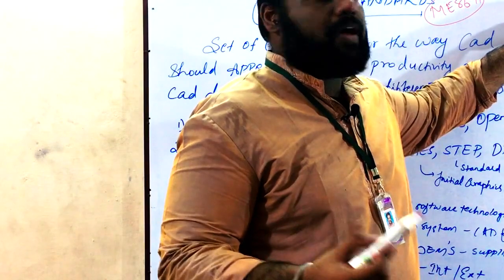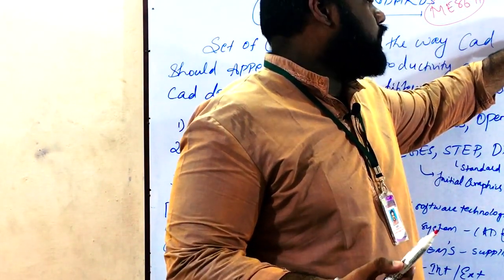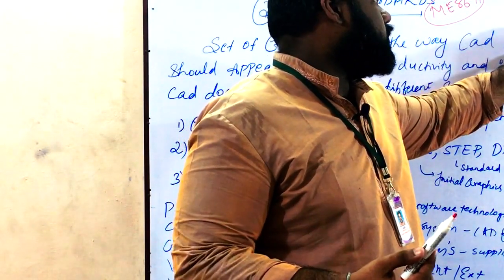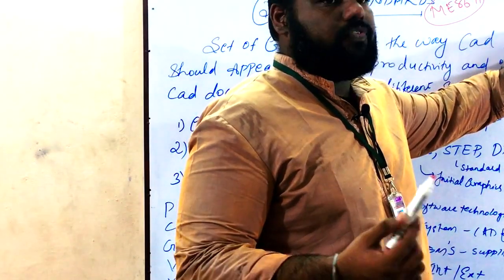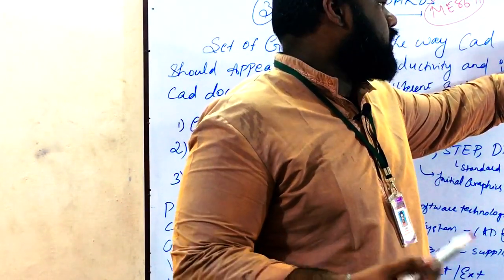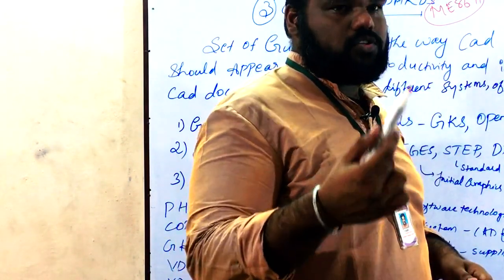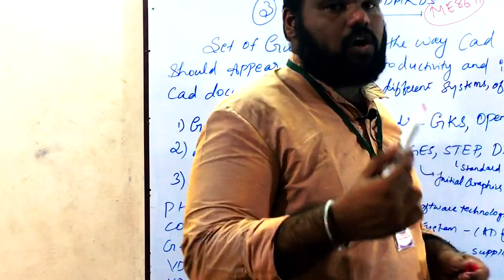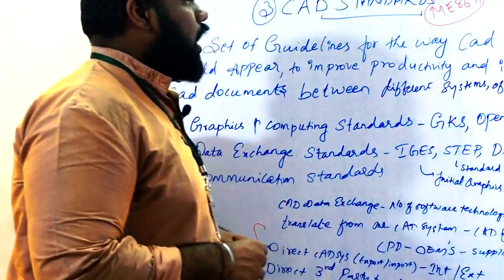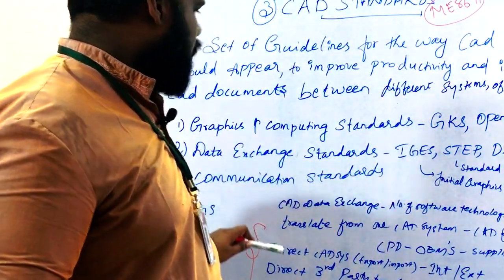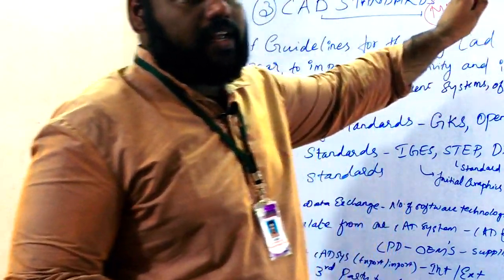The intermediate data exchange formats include BMP (Windows Bitmap files), TIF (text files), JPEG, GIF (Graphics Interchange Format files), and PIC files. All of these are combined to form CAD data exchange methods.